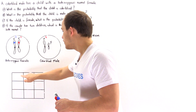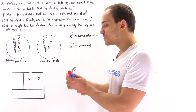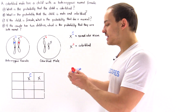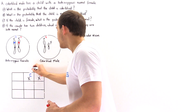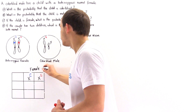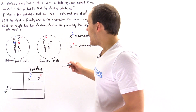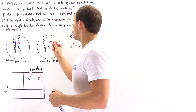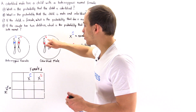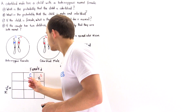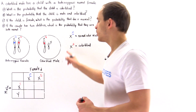One egg cell contains the normal X chromosome (uppercase C), and the other egg cell contains the colorblind X chromosome (lowercase c). These are the female egg cells. For the male sperm cells, through meiosis and segregation, one sperm cell type contains the X chromosome with the lowercase c, and the other sperm cell simply contains the Y chromosome.